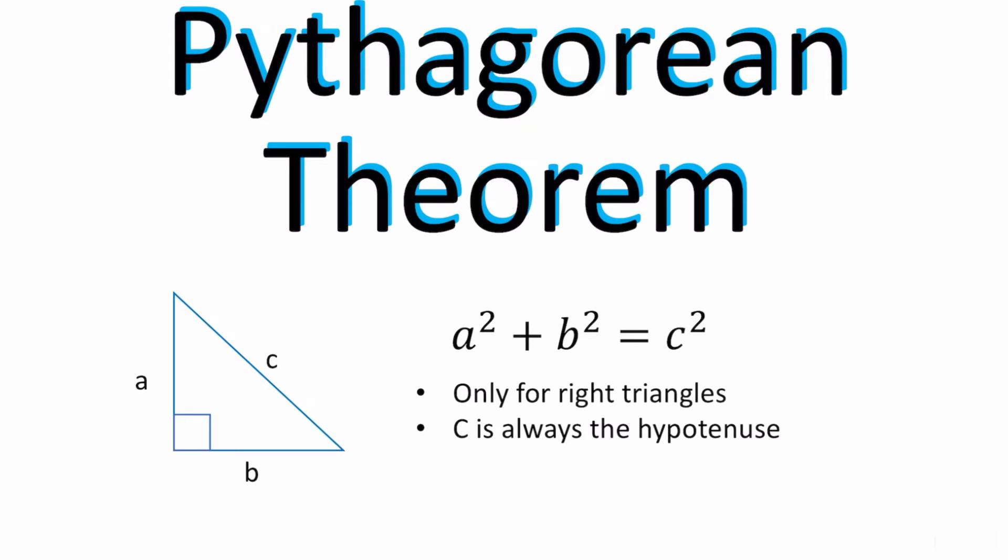Today we're going to be talking about the Pythagorean Theorem. A squared plus B squared is equal to C squared. What does this mean? The important part here is the C. C is always going to be the hypotenuse. This right here in the triangle indicates that it is a 90 degree angle, so this is a 90 degree or a right triangle.